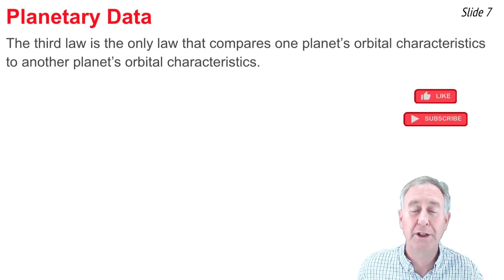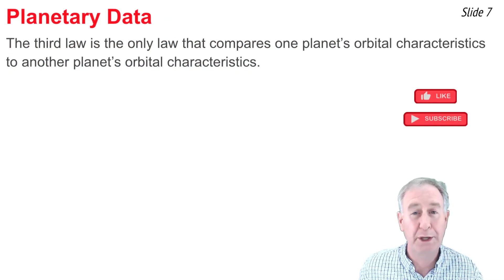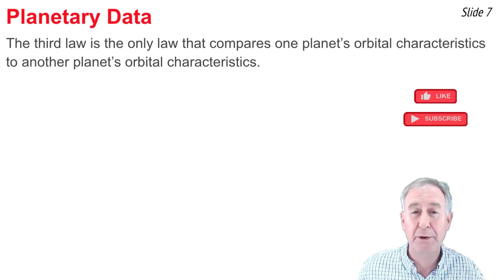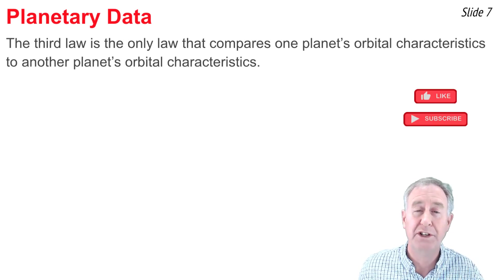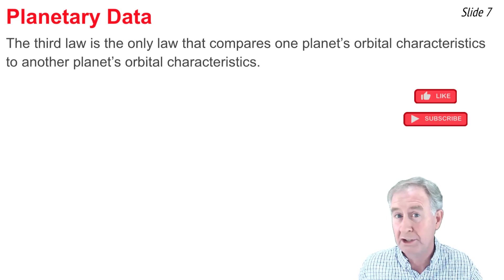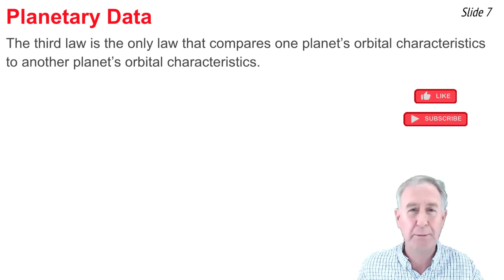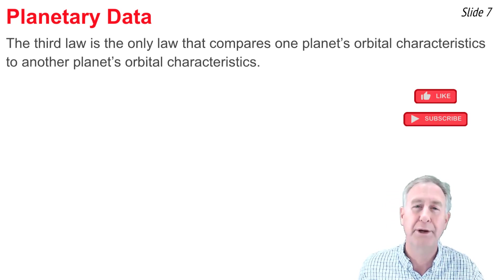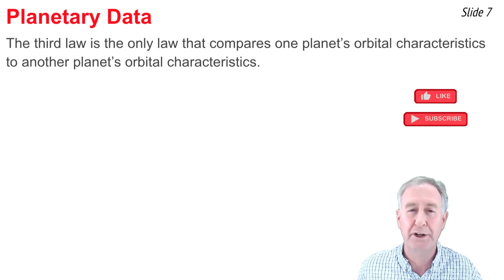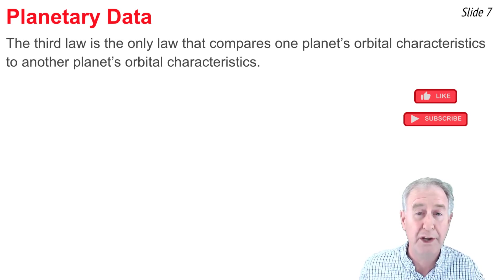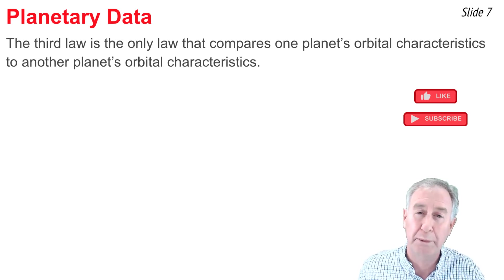Kepler's third law is the only law that compares one planet to another planet. Put another way, if there was only one planet in our solar system, there would still be a first law and still be a second law, but there couldn't be a third law because the third law compares one planet's orbital characteristics, its T² / R³ ratio, to another planet's orbital characteristics, its T² / R³ ratio.